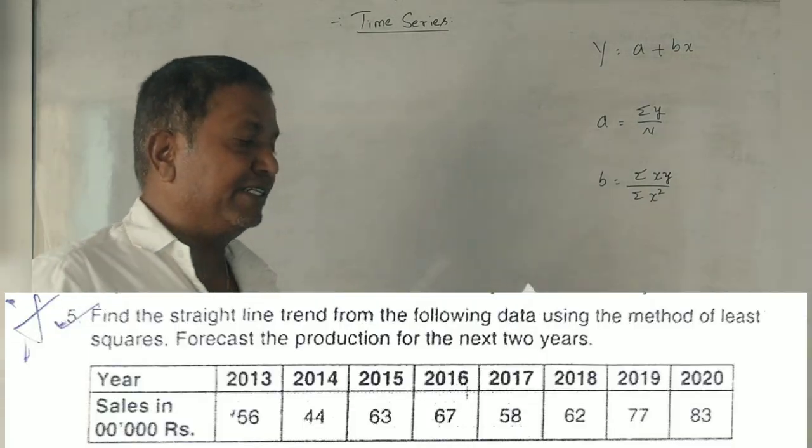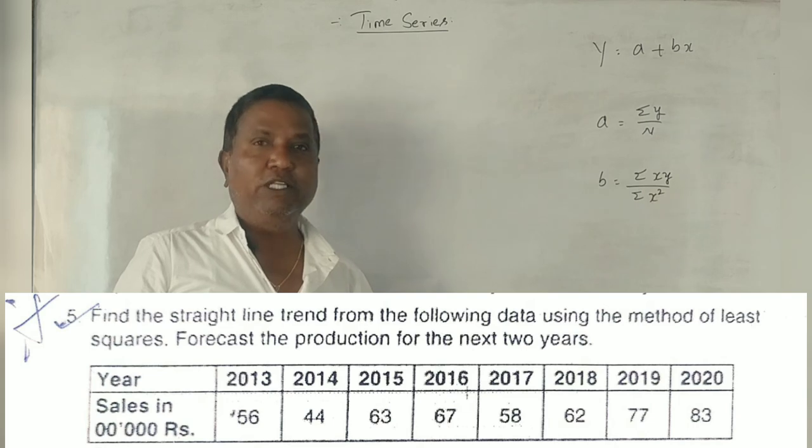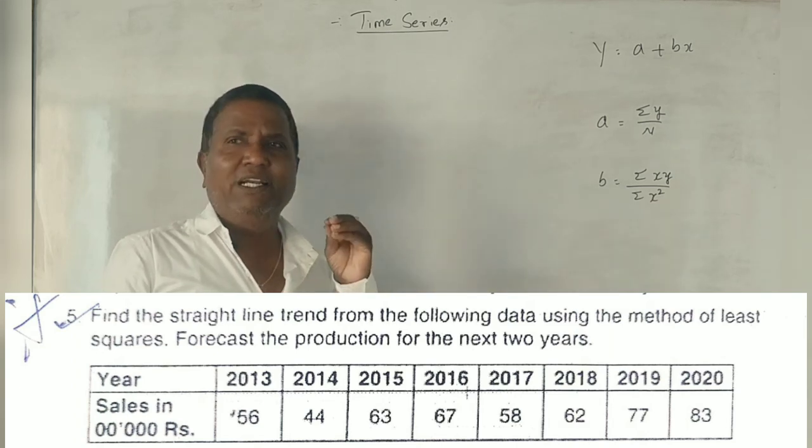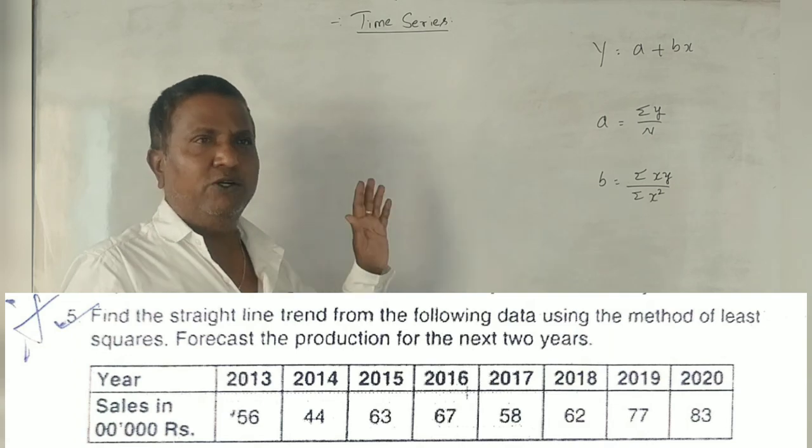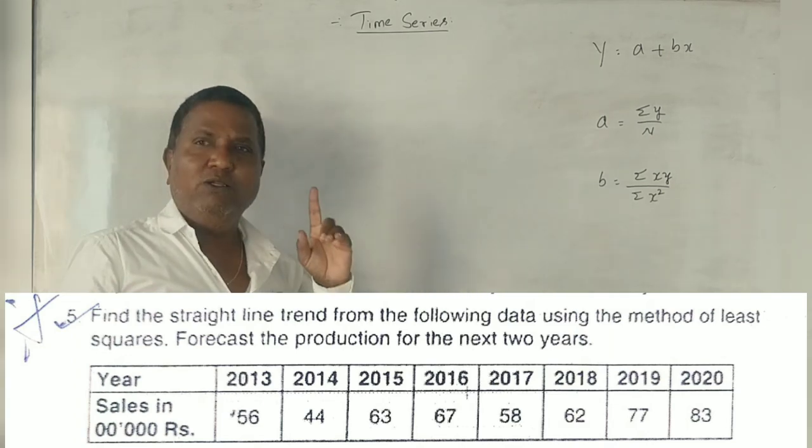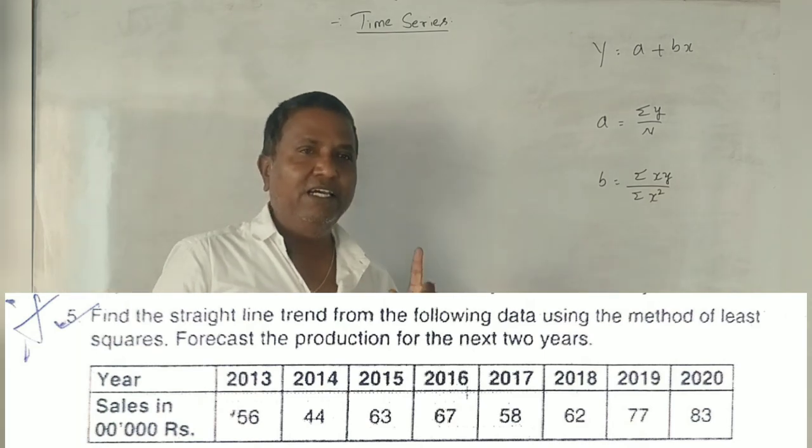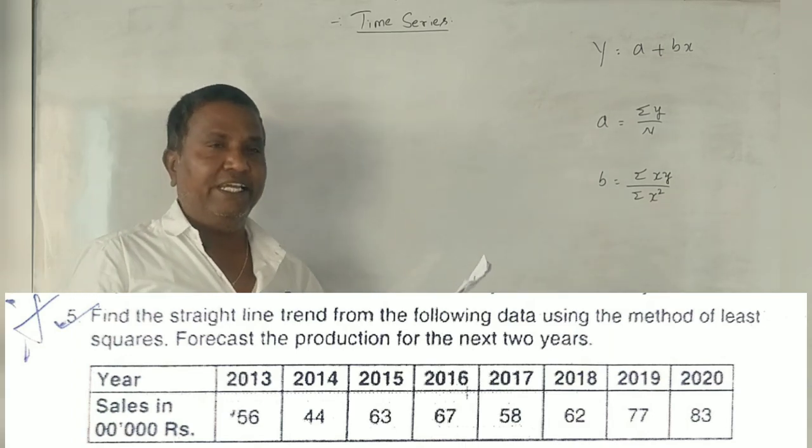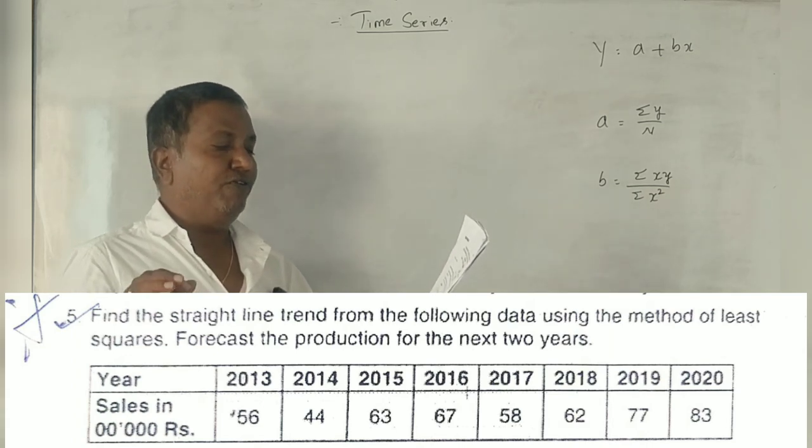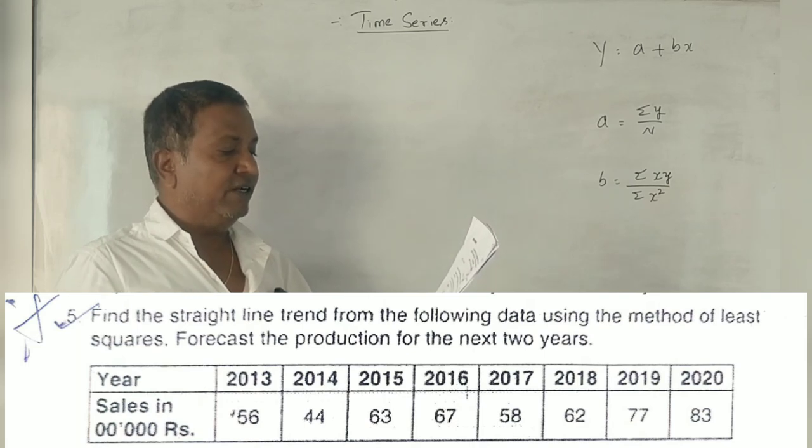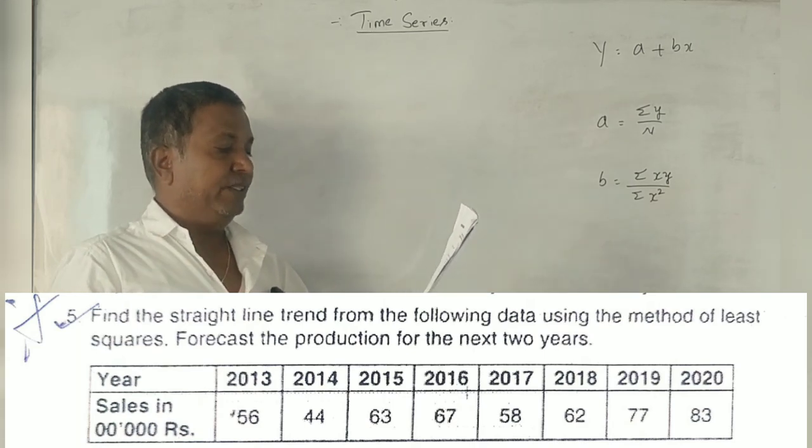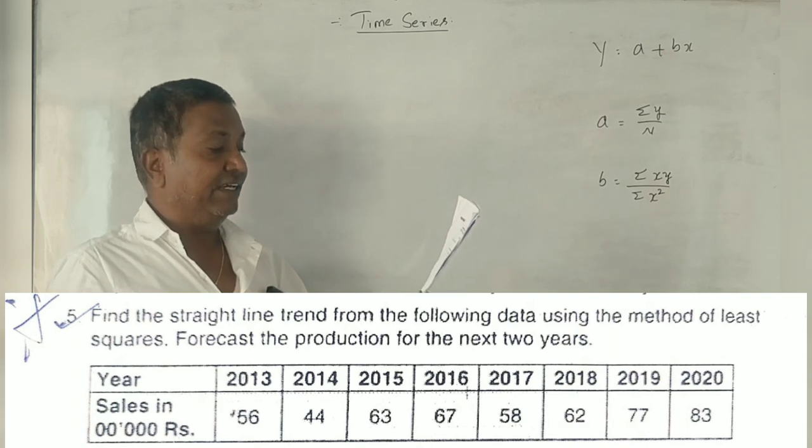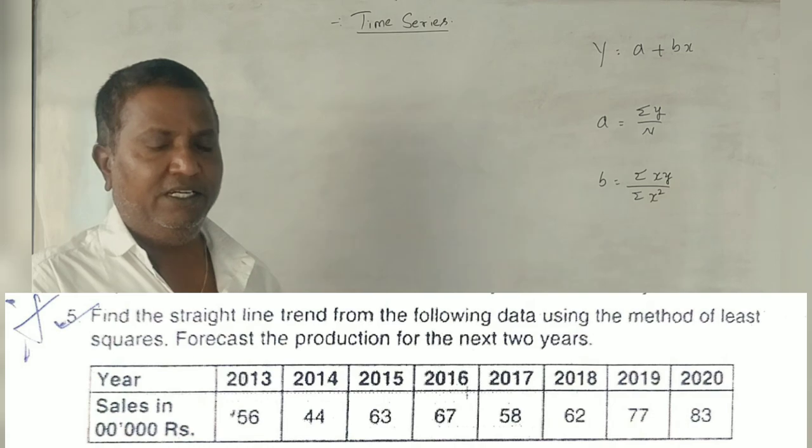Students, this is for MBA first semester Bangalore University. You will get 5 marks within 5 minutes and it is not so difficult to understand. Under time series, one method is least square method or straight line method. Find the straight line trend from the following data using the method of least squares. Forecast production for the next 2 years. Sales from 2013 to 2020 were 56, 44, 63, 67, 58, 62, 77, and 83 thousand rupees.